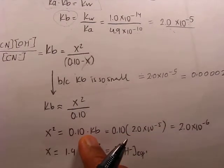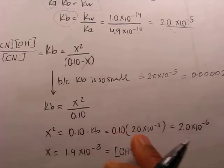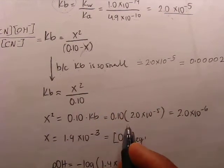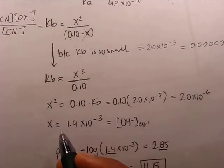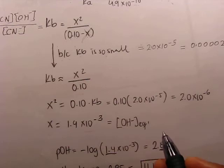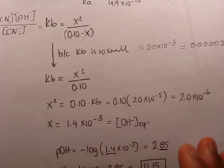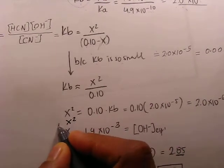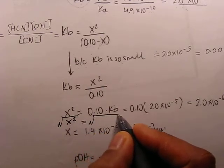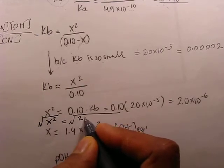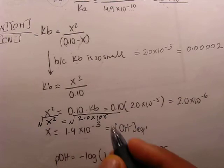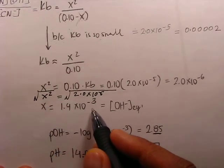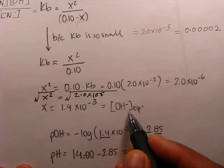So Kb equals x squared divided by 0.10. Therefore x squared equals 0.1 multiplied by Kb, which is 0.1 times 2.0 times 10 to the minus 5, giving 2.0 times 10 to the minus 6. Taking the square root: x equals the square root of 2.0 times 10 to the minus 6, which equals 1.4 times 10 to the minus 3. This is the hydroxyl ion concentration at equilibrium.